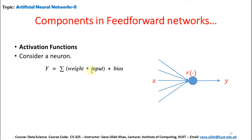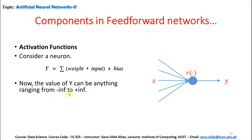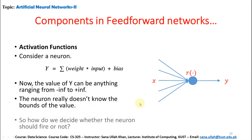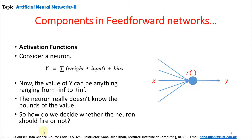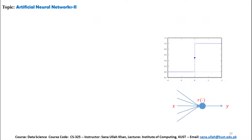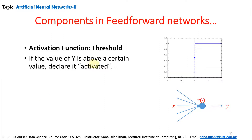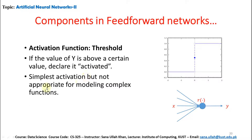Consider a neuron: the output is the sum of weights multiplied by inputs plus bias. The value of Y can range from minus infinity to positive infinity, so the neuron does not know the bounds of the values. How do we decide whether the neuron should fire or not? It depends on the activation function. For the threshold activation function: if the value of Y is above a certain value, declare it activated. For example, if Y > 0.5 the activation function is activated, otherwise not. This is the simplest activation but is not appropriate for modeling complex functions.